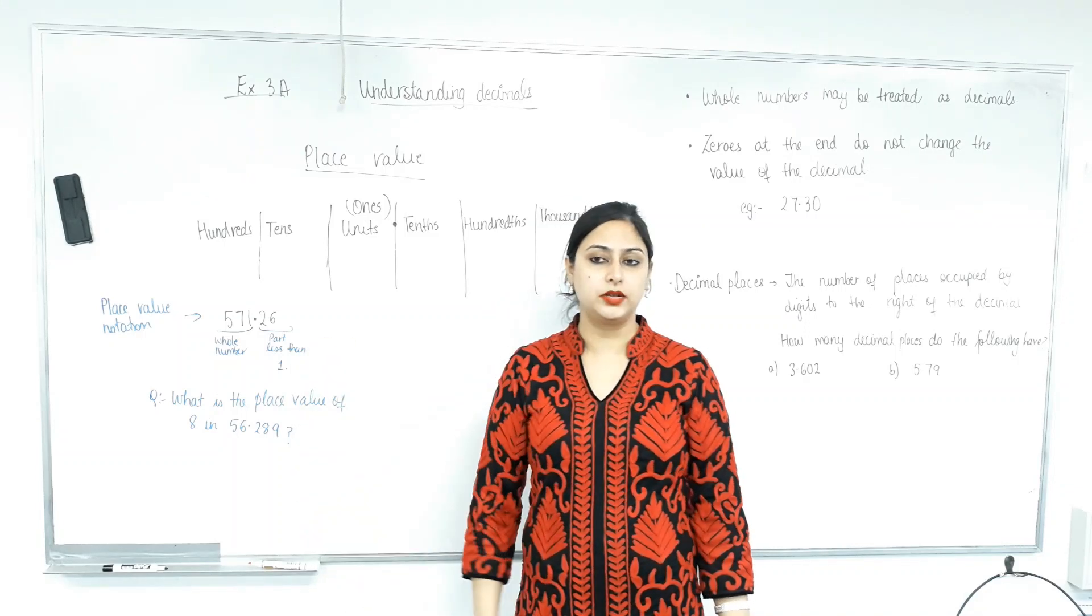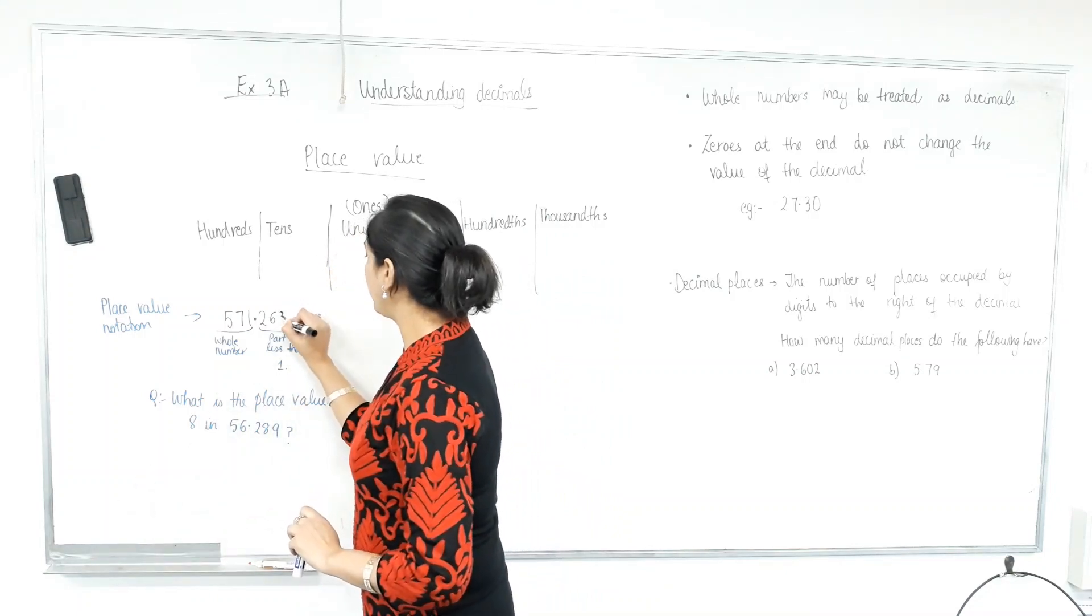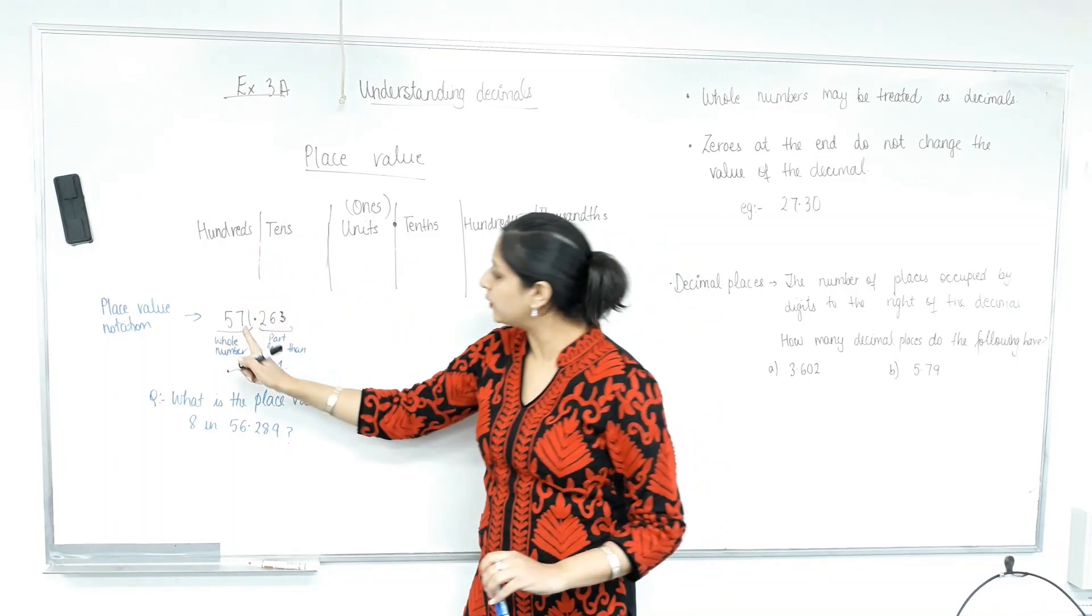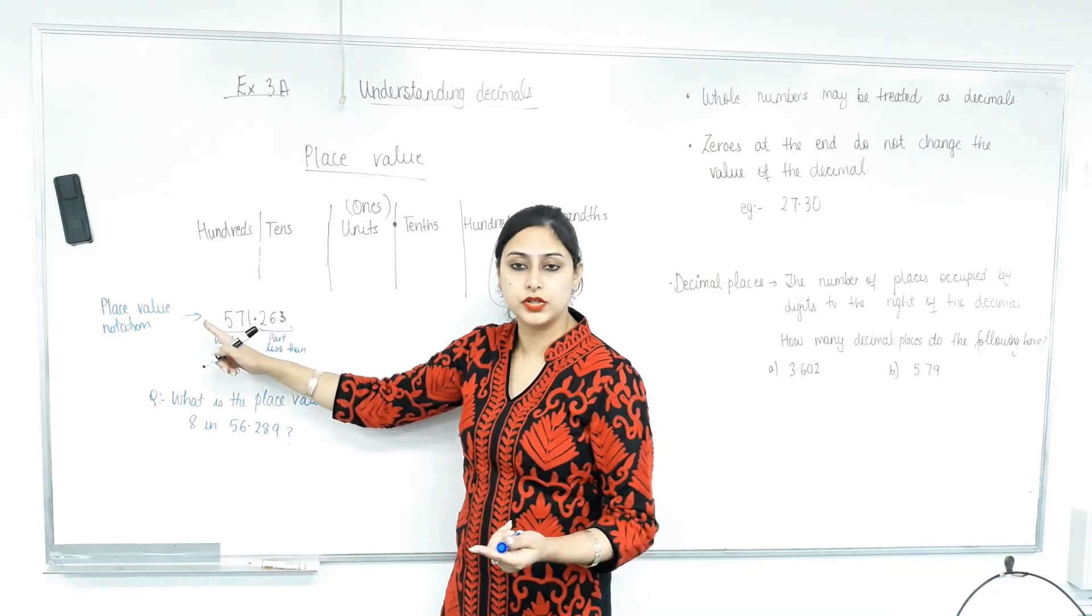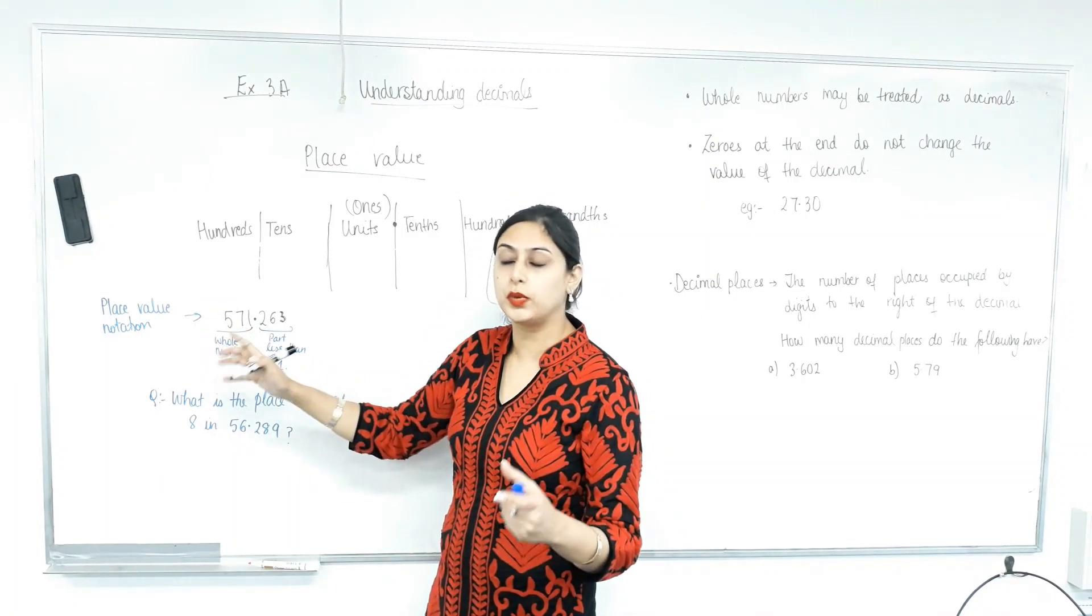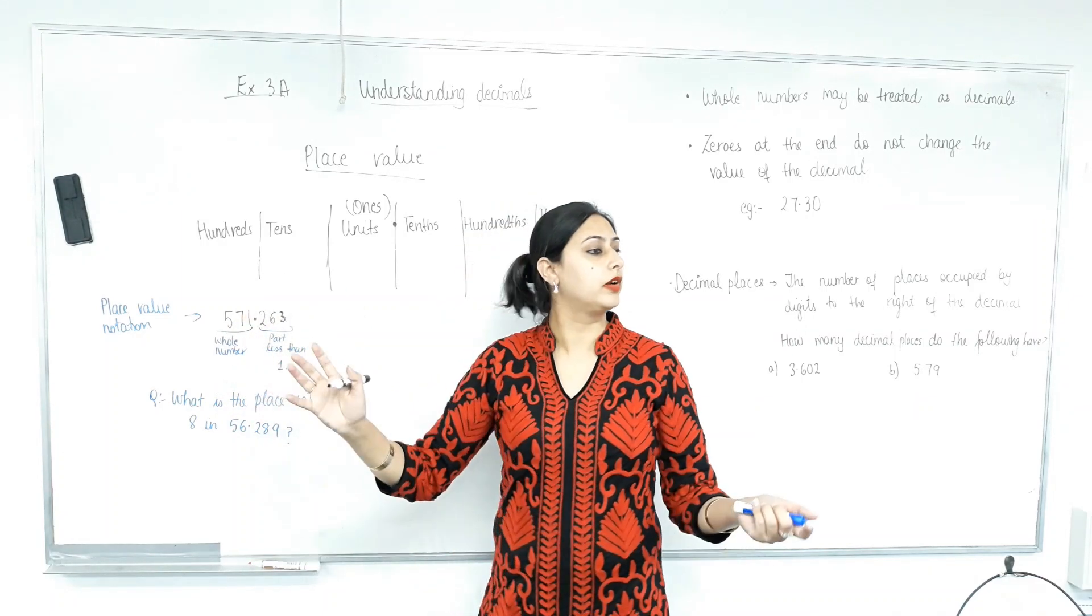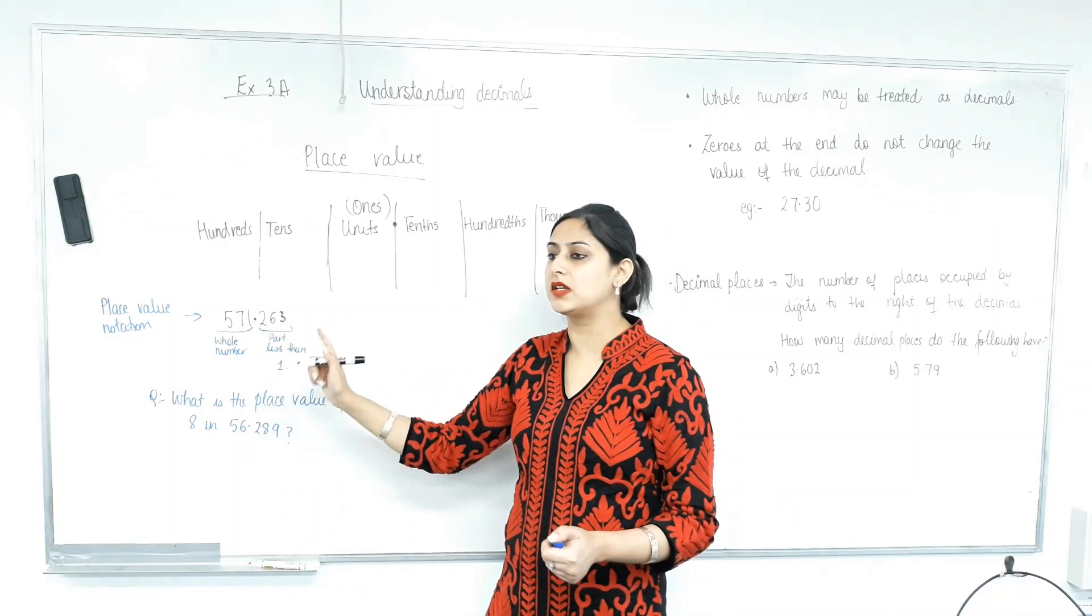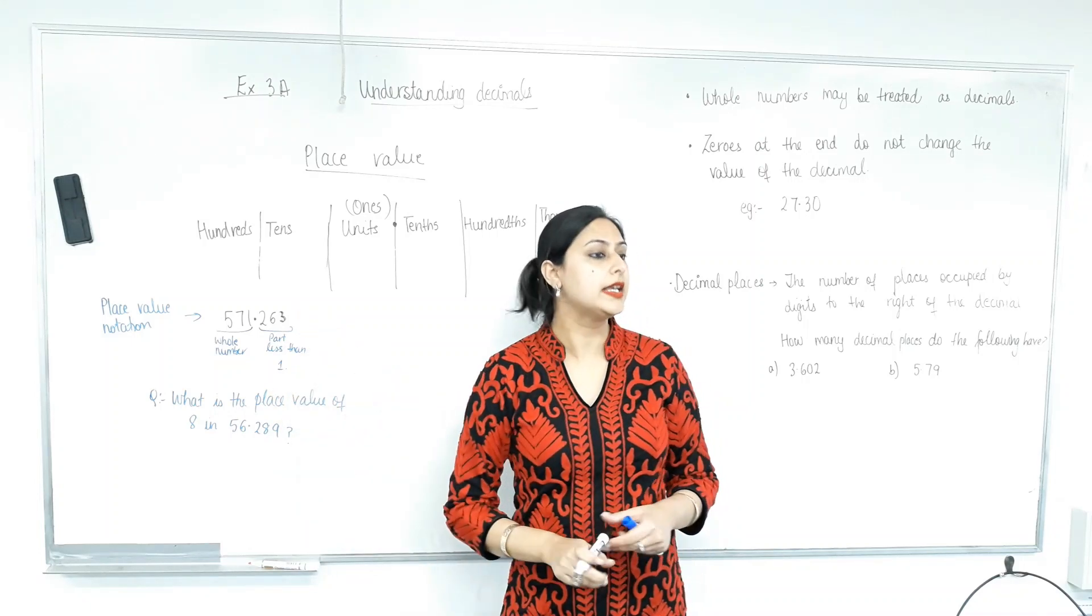So, what if it was 26? Would I say 571 point 26? No. No. Why? Let's talk about the place value. Because this is not 263 now. Because we call this 571 because of our place value. So, we start from 1s, 10s and 100s. So, what place is 5 in? 100. So, we call it 500. What place is 7 in? 70. So, we call it 570. What place is 1 in? So, we call it 571.